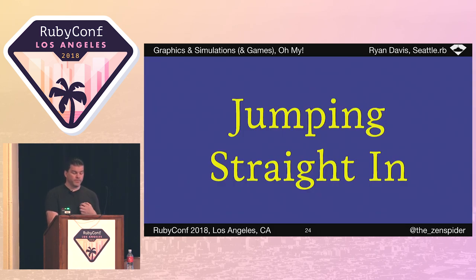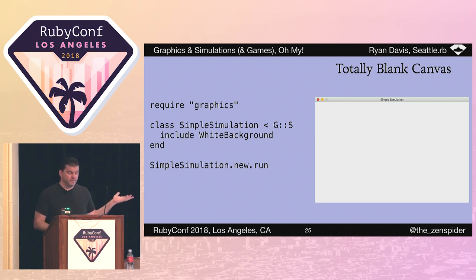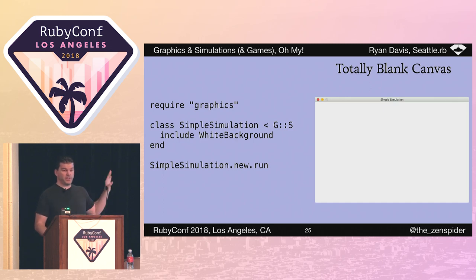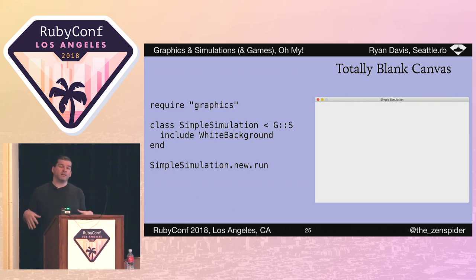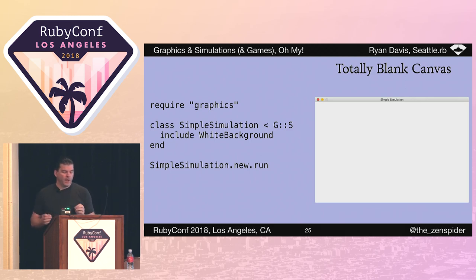I prefer real examples over theory and marketing fluff, so let's quickly get concrete with a real and tangible example. Let's start with a blank window — this is all it takes. You require graphics, you create a new class, and you subclass Graphics::Simulation — where G::S is just slide shorthand because nothing fit in this talk. You instantiate it and tell it to run. You wind up with a blank canvas that defaults to half the width and height of your actual screen.